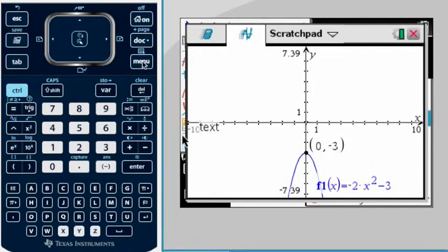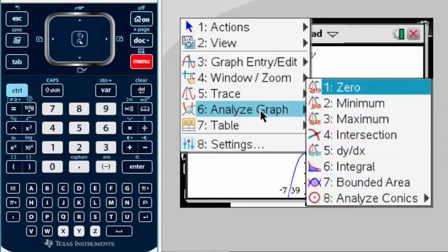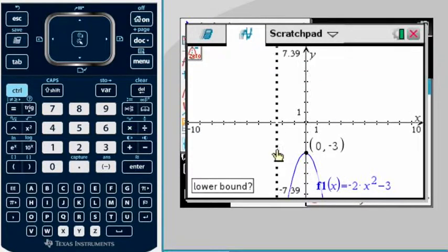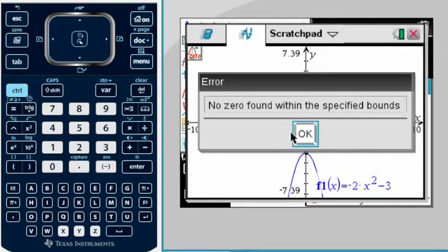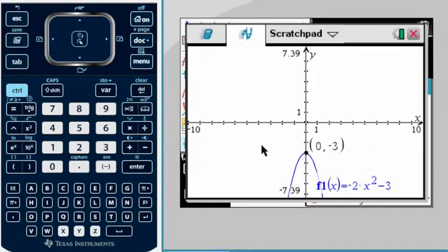But if by mistake I do a zero, so let's do this: menu, Analyze Graph, zero, and you draw your bounds, you will get that it will tell you there were no zeros in the specified bounds. In other words, in the limits that you give it, there's no zeros.